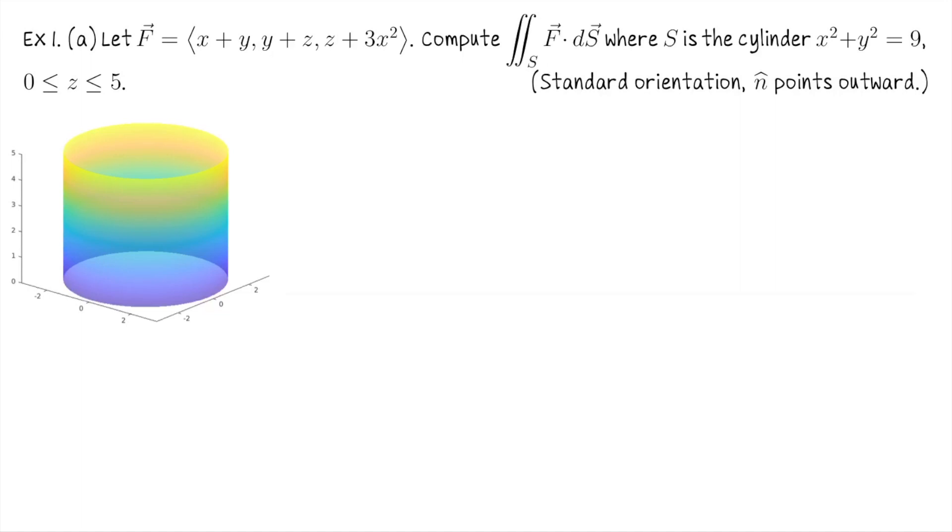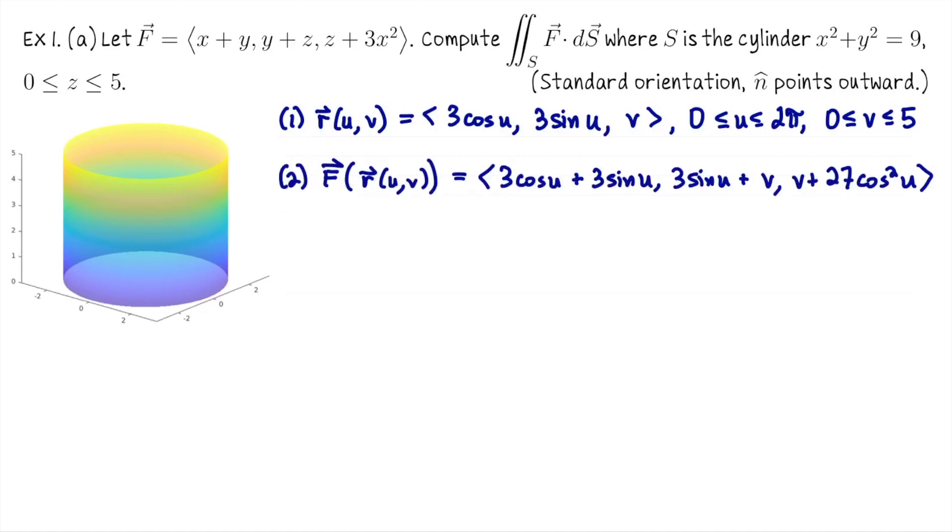First part is just to compute this flux integral. This is a flux integral, so we need to parametrize the cylinder, we need to do F of R of u,v, we need to compute R_u and R_v, take their cross product and check the orientation, and then set up the surface integral. Here's our parametrization for the cylinder: R(u,v) = ⟨3cos u, 3sin u, v⟩. Every xy coordinate on the cylinder lives on the circle of radius 3 in the xy plane, and v is just representing the z coordinate.